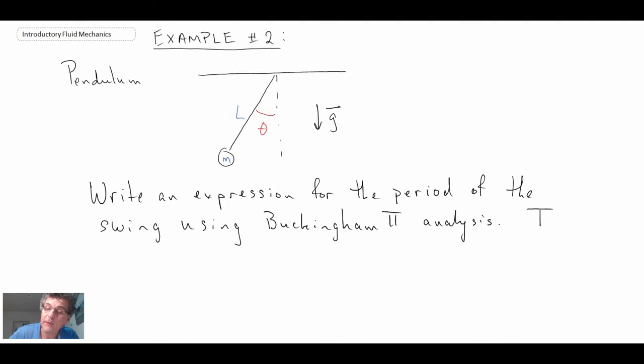So as we go through our analysis, we'll go through the normal steps that we do. And we're first going to assume that the period of the swing of the pendulum is going to be dependent upon the mass of the bob, the length of the cable that is connecting the bob to some ceiling above, the gravitational constant, and the angle that the cable makes with respect to the vertical. And so we can see we have n equals 5.